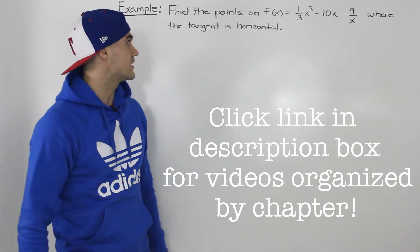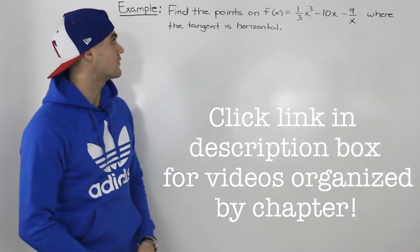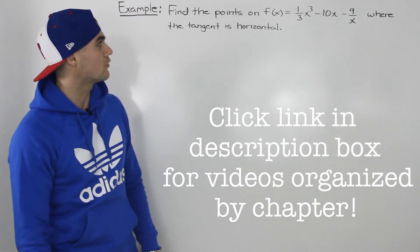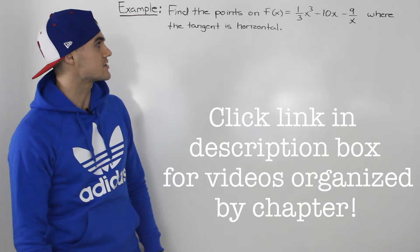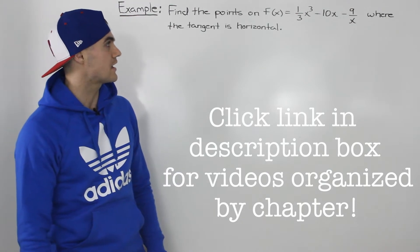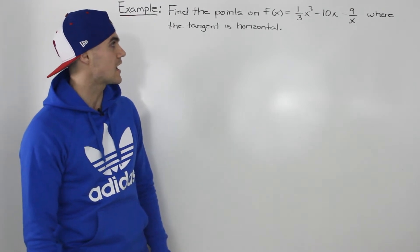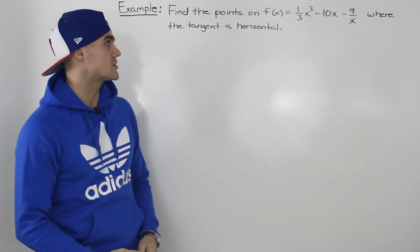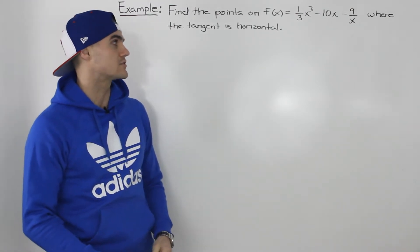What's up everybody? Moving on to the next example, we have to find the points on the function (1/3)x³ minus 10x minus 9 over x, where the tangent is horizontal.